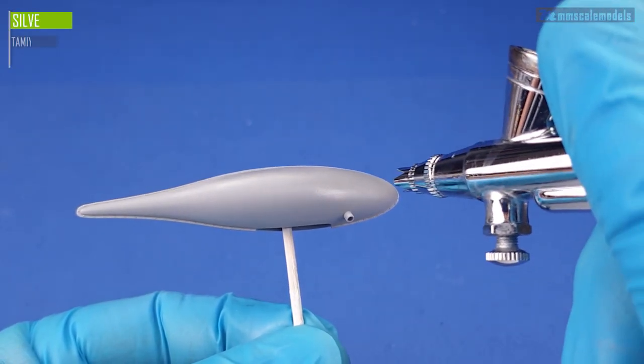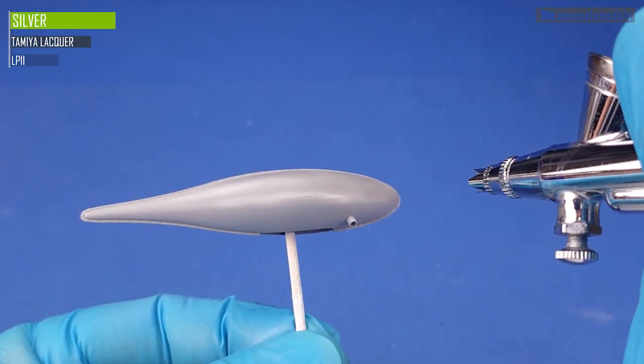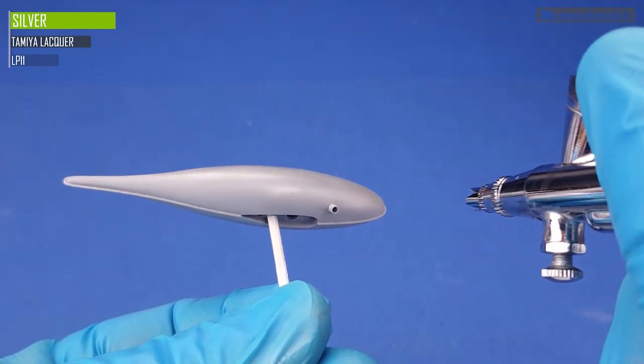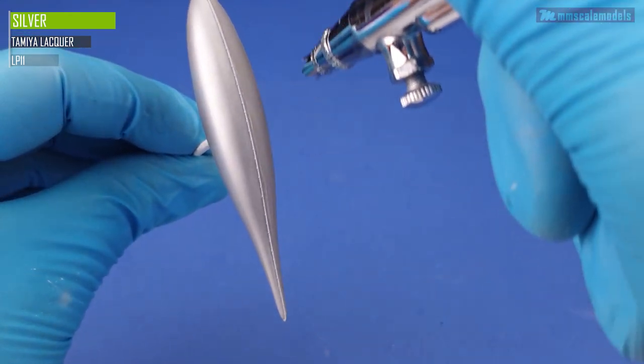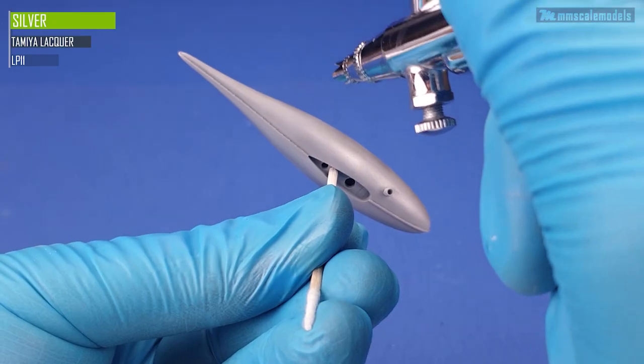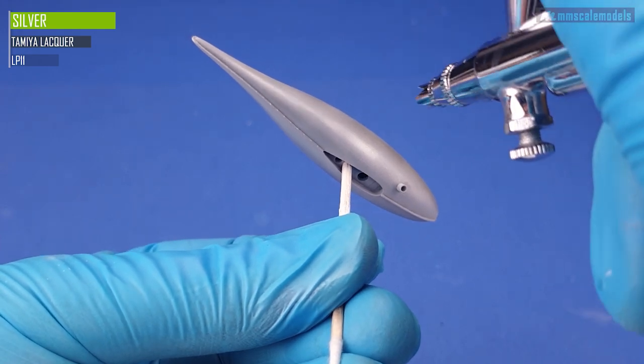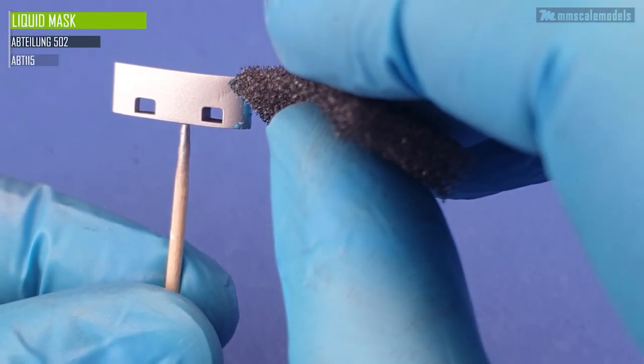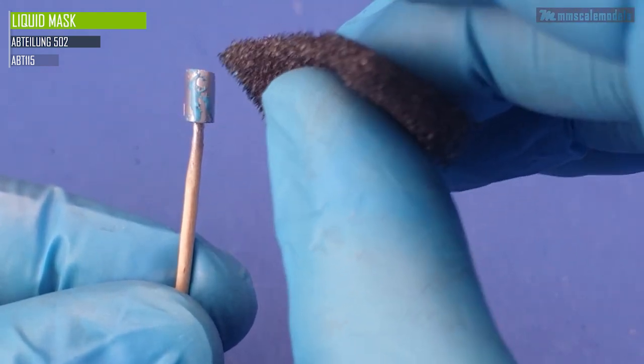In the previous video of the Invader series we created the napalm tanks and printed them into existence. Now it is time to do the painting and the weathering. After the primer I applied Tamiya LP-11 silver on the tanks and their pylons. Next on the pylons I applied liquid mask using a sponge.